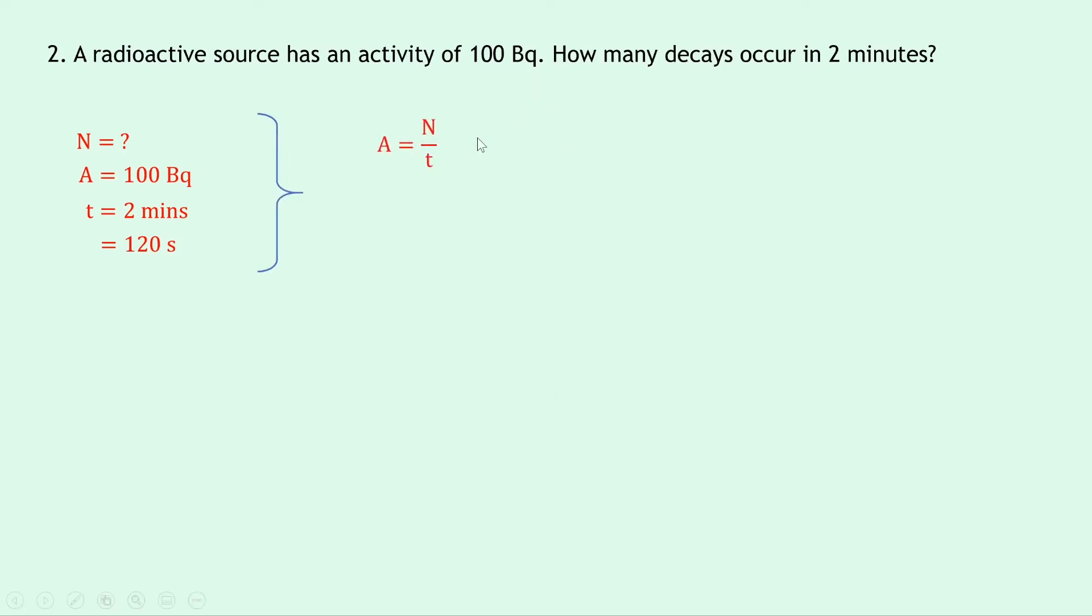Rearranging for N this time we need to multiply both sides by T to get rid of this on the denominator, so that gives us N equals A times T.